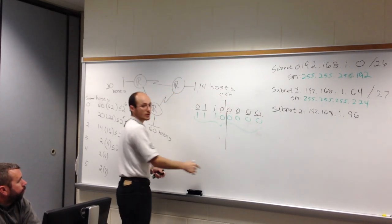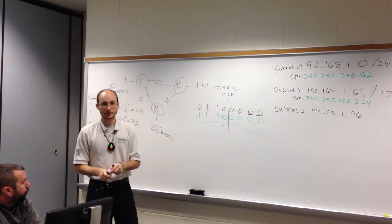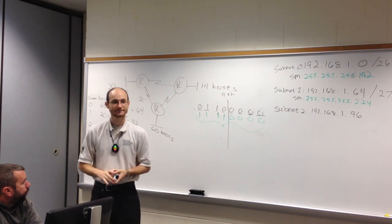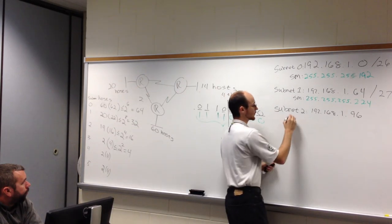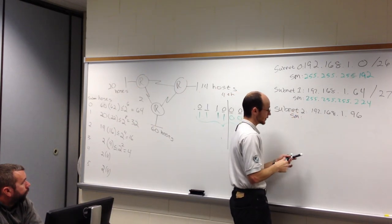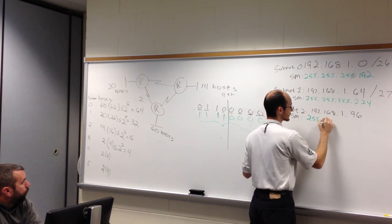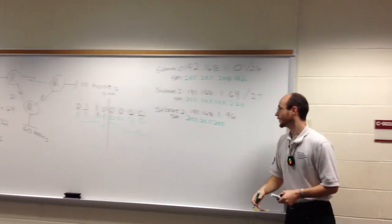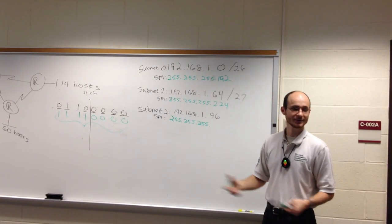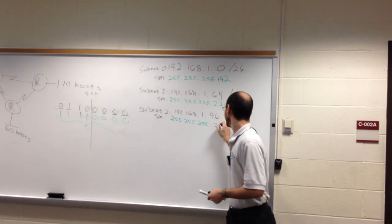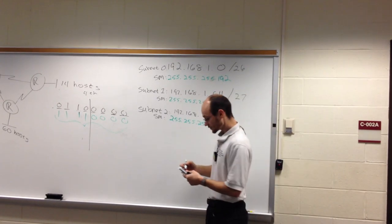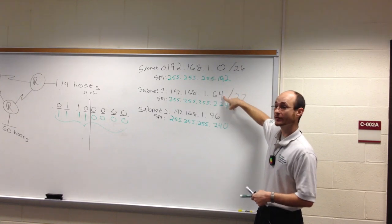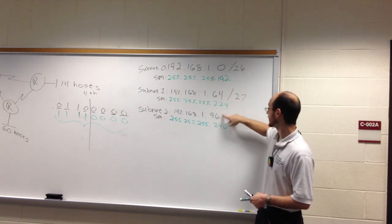For subnet two, I leave four bits behind — one, two, three, four — draw the line. The bit previously on the host side becomes a network bit. The subnet mask for subnet two: 255.255.255 and you give me the last octet. You notice we've been adding each previous subnet's width to get from one network address to the next. Subnet zero was 64 wide, subnet one was 32 wide.